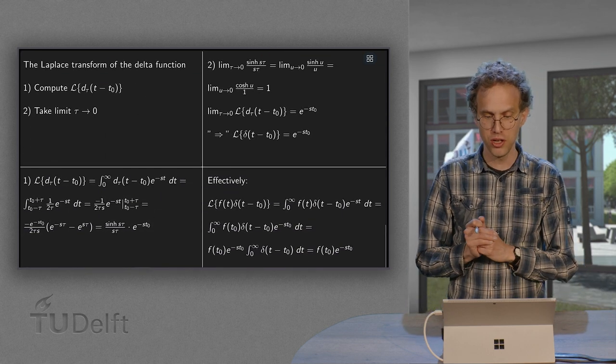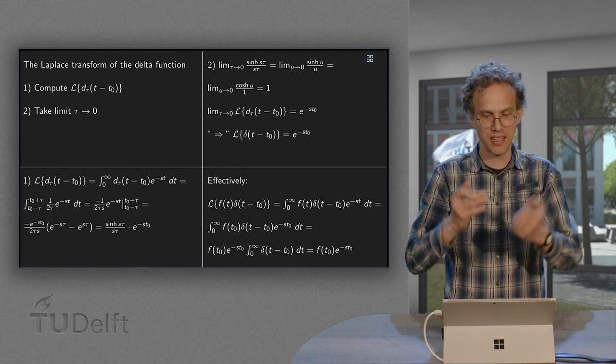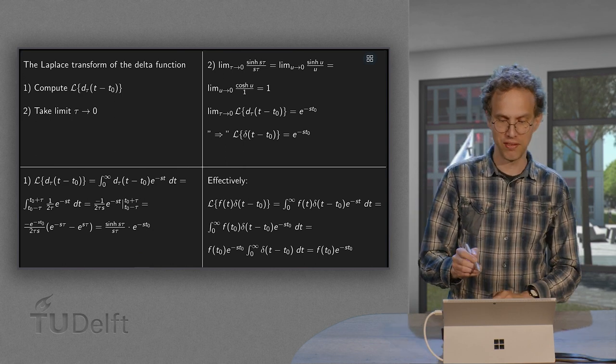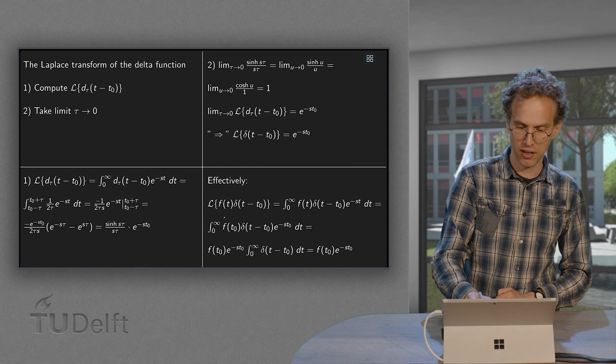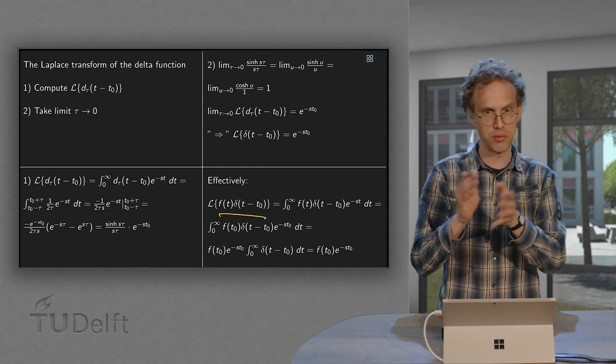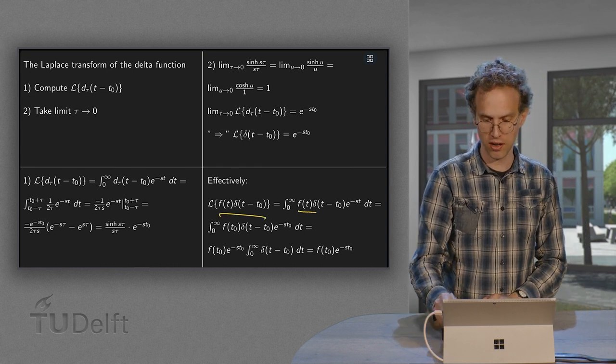Now how do we use it? How can we use this effectively? Now what's going on effectively is the following. If you have the Laplace transform of some function times some delta function. Now plug it in over here. Now what's going on?